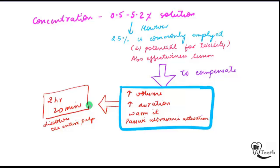When we use sodium hypochlorite, it will dissolve the pulp in 2 hours and 20 minutes. The next most effective irrigant takes 24 hours. So sodium hypochlorite is the most effective irrigant in dissolving the pulp.